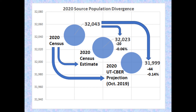The three population figures used in this analysis diverged, but only slightly. The 2020 Census Count for Claiborne County was 32,043. The 2020 census population estimate, produced a few months prior, was only 20 less — or 0.06 percent less than the census count. The 2020 projection released in October of 2019 predated both figures by more than a year but showed similar minimal divergence, being less by 44, or 0.14 percent. All in all, the combined use of all three population figures and associated data sets painted a fair picture of population trends and dynamics from the past and into the future.